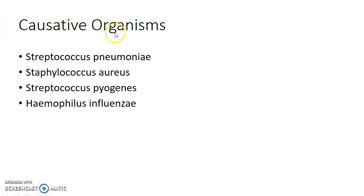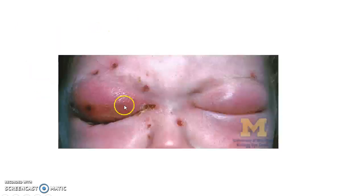What are the causative organisms of orbital cellulitis? Orbital cellulitis can be caused by Streptococcus pneumoniae, Staphylococcus aureus, Streptococcus pyogenes, or Haemophilus influenzae.